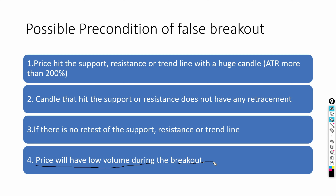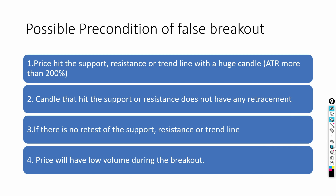The fourth precondition: price will have low volume during the breakout. When you have a volume profile on your chart, you can see that even though price broke aggressively, the volume is very low. Low volume on a breakout candle is a strong signal that it could be a false breakout.